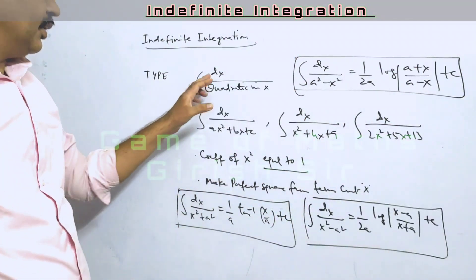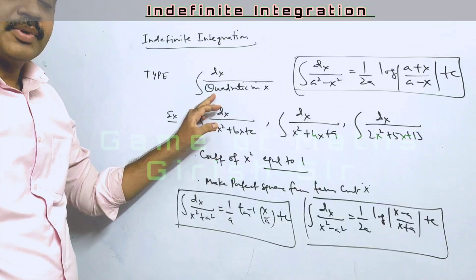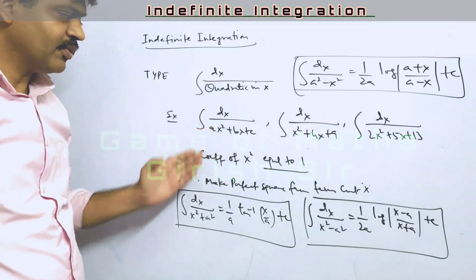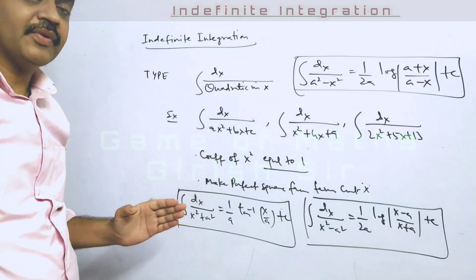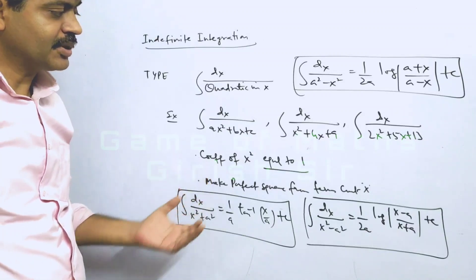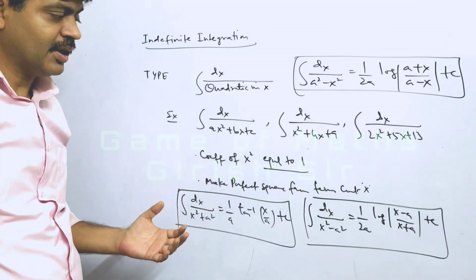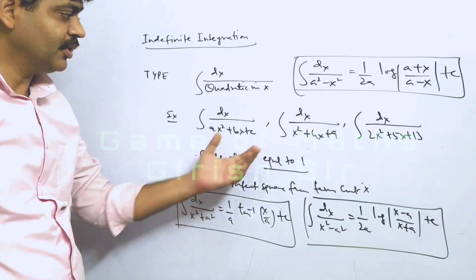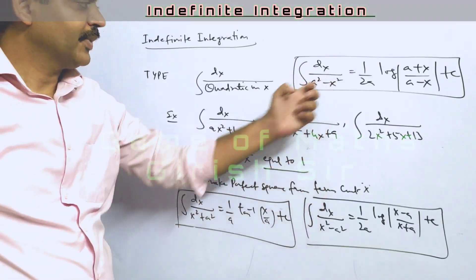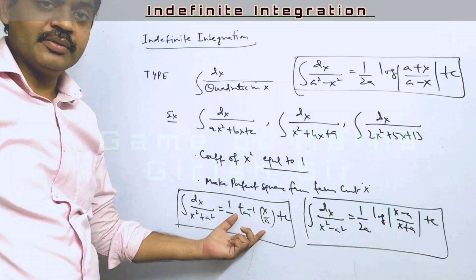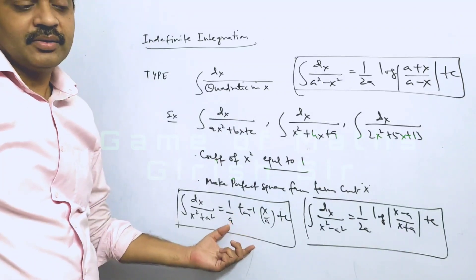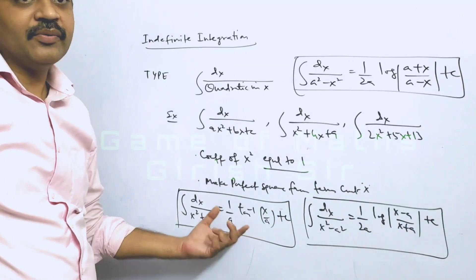So if you are given dx upon a quadratic expression in x: Step 1, make the coefficient of x squared equal to 1 if it is not already 1. Step 2, combine the terms containing x and make a perfect square. Then your integral will reduce to one of the standard types, and you can use the direct formula to get the final answer.